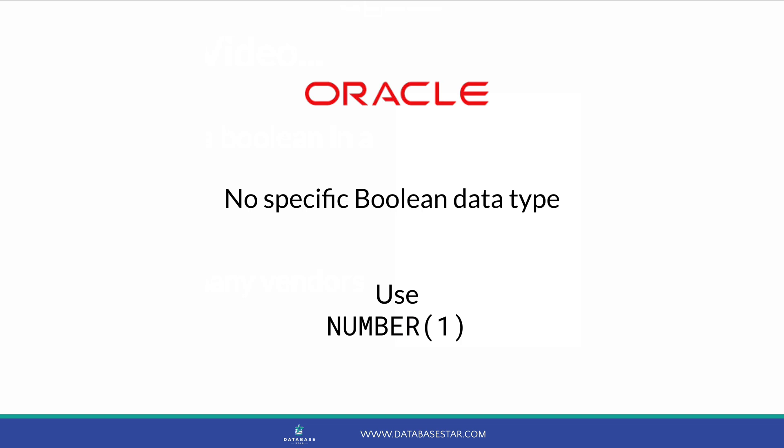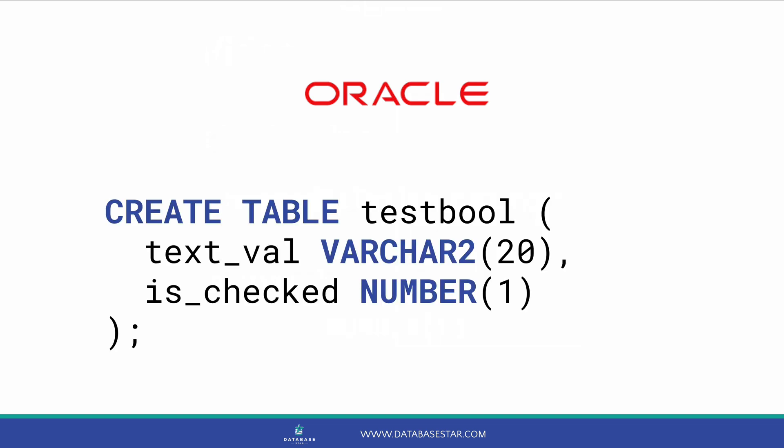Let's start with Oracle. In Oracle, there is not a specific Boolean data type. There is one in PL/SQL, which is Oracle's procedural language, but that can't be used when creating tables. So what do we do instead? I recommend storing Booleans as a number field with one digit. This would store a value of 1 for true and 0 for false. The SQL to create a table would look like this.